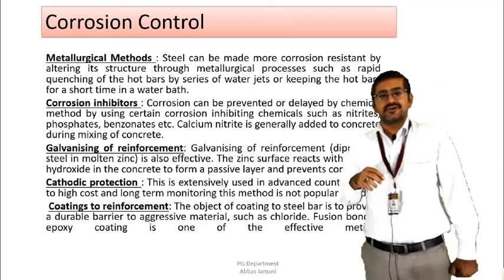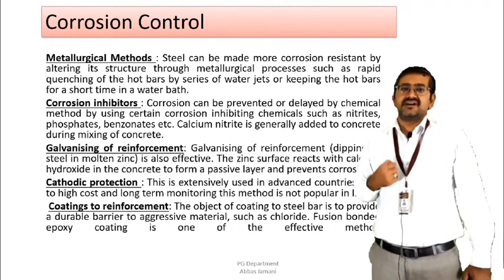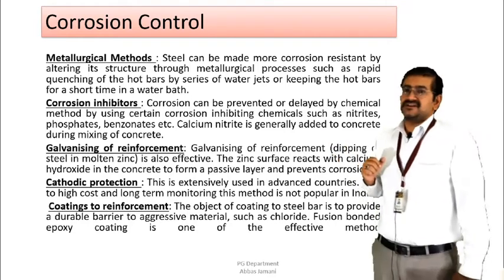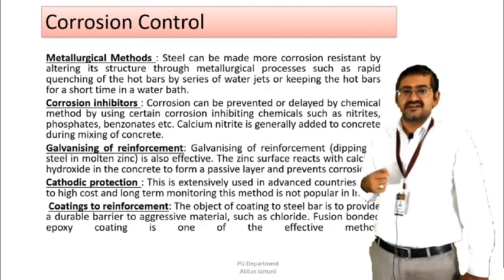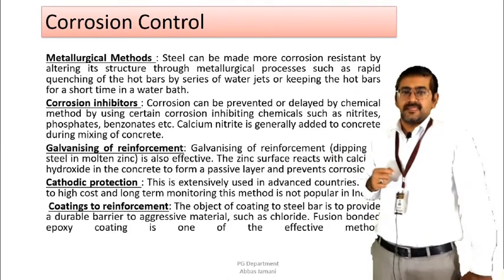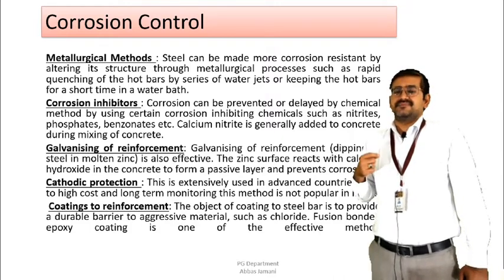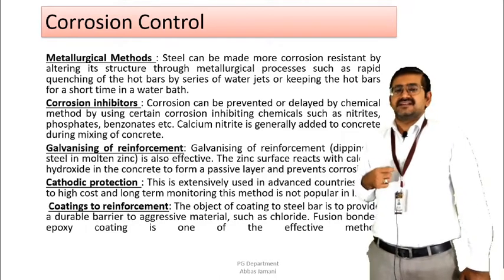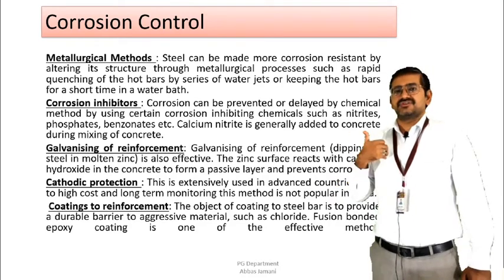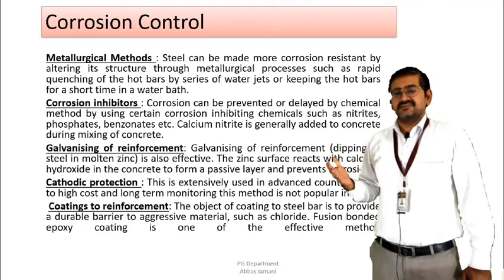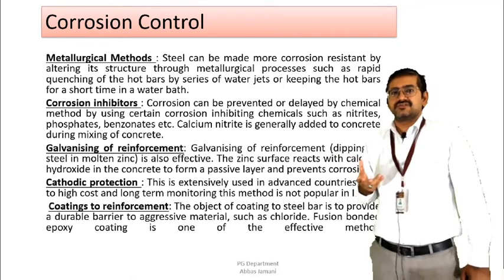The second option is corrosion inhibitors. If you introduce some minerals or chemicals in the concrete, the initiation of corrosion can be delayed; these are known as corrosion inhibitors. Corrosion can be prevented or delayed by using certain corrosion-inhibiting chemicals such as nitrites, phosphates, and benzonates. The general practice is that calcium nitrate is mixed into the concrete during mixing before placing the concrete around the reinforcement. Using corrosion inhibitors will not ensure 100% corrosion-proofing, but it will delay the process — for example, extending the corrosion lifecycle from 5 years to 7 or 8 years.